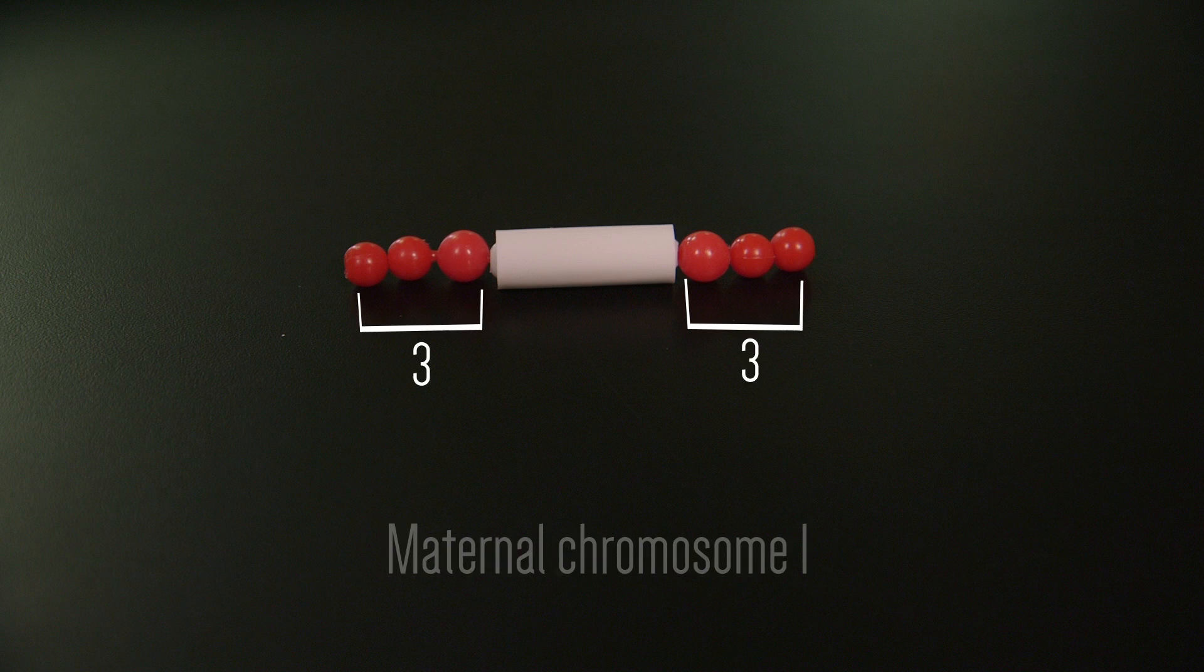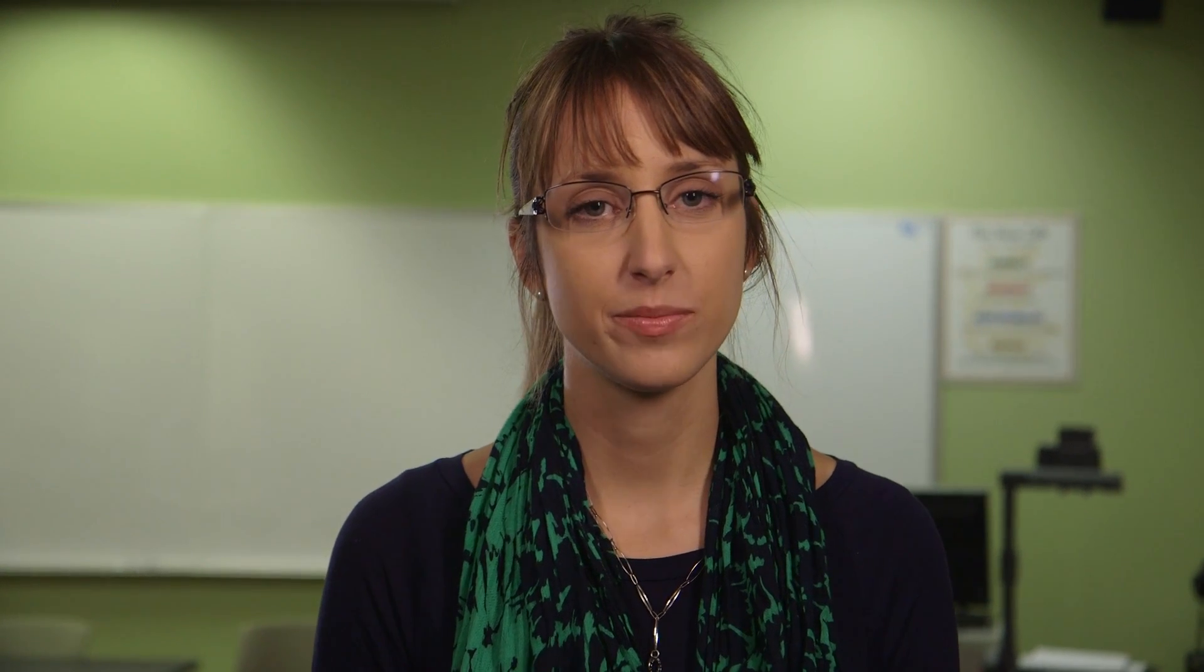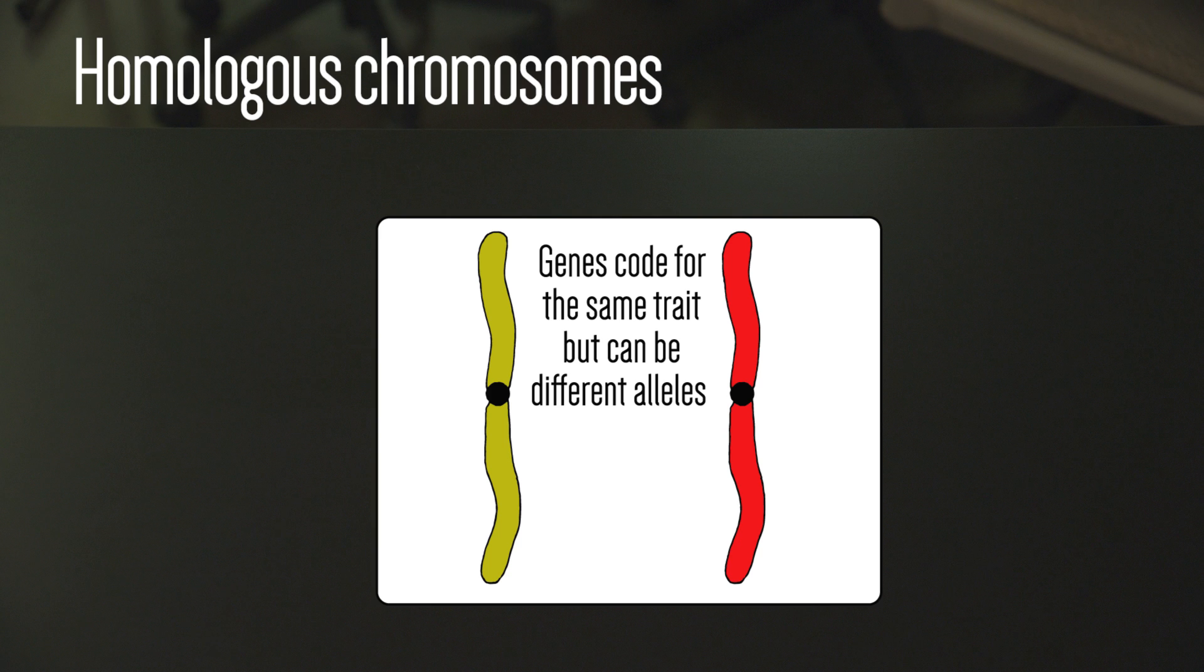Recall that in a diploid cell, the chromosomes come in pairs, one from each parent. Homologous chromosomes look the same. They will be the same length with the centromere in the same place. Chromosome pairs are homologous, that is, they have genes for the same trait, but not necessarily the same version of that gene.